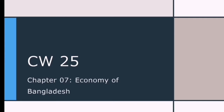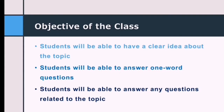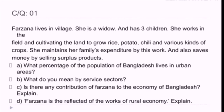Hurry up, write down the CW number on your copy and do not forget to write the date as well. Today we are going to have another class on the chapter named Economy of Bangladesh. Our class objectives: by the end of the class all of you will have a clear idea about the topic and will be able to answer one-word questions. Today we will solve two extra creative questions.